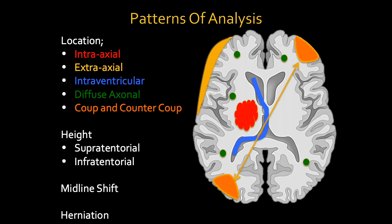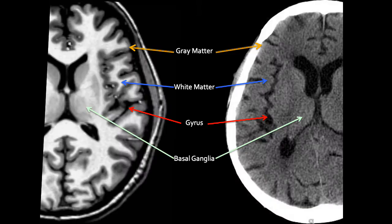When we look for patterns of disease and analysis, we always look at intra-axial, extra-axial, intraventricular, diffuse axonal, and coup and contrecoup locations. More importantly, you always need to determine the height of these bleeds — is it supratentorial or infratentorial? Then we need to understand if there is any intracranial or midline shifting, as that may require decompression. With raised intracranial pressure, we also need to assess for herniation, which can occur at multiple areas.